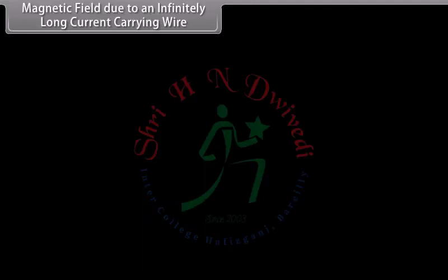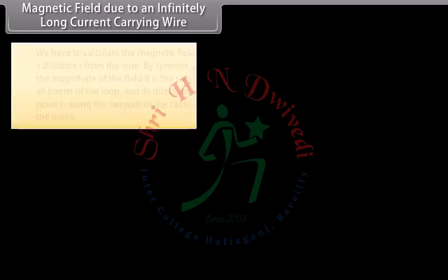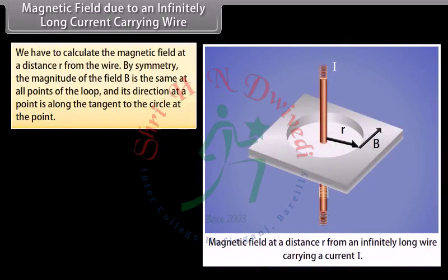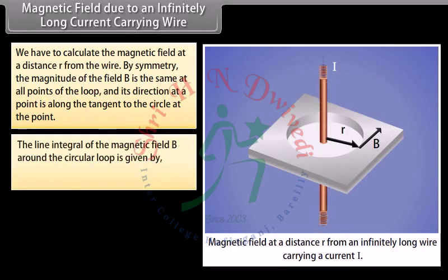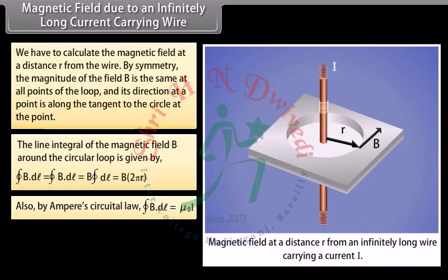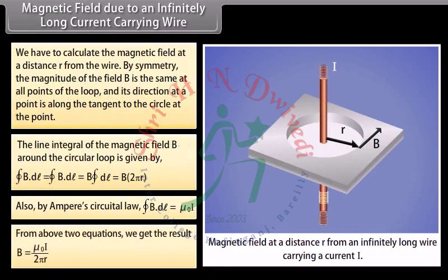Magnetic field due to an infinitely long current carrying wire: We calculate the magnetic field at a distance R from the wire. By symmetry, the magnitude of field B is the same at all points of the loop, and its direction at a point is along the tangent to the circle at that point. The line integral of B around the circular loop equals B times 2 pi R. Applying Ampere's Circuital Law, we get B equals mu-0 I divided by 2 pi R.